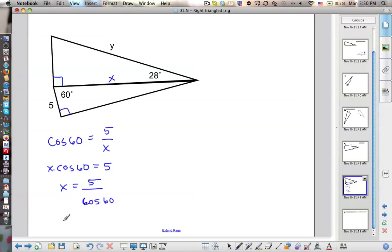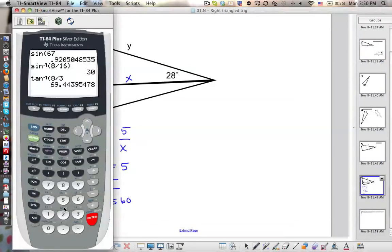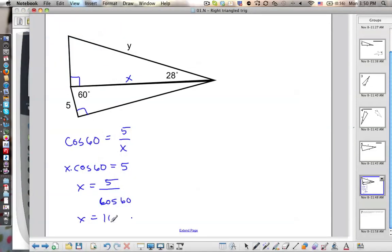Cosine 60. So x equals... going to my calculator, 5 divided by cosine 60, which is 10. So x equals 10.